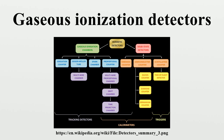Ionization type smoke detectors are gaseous ionization detectors in widespread use. A small source of radioactive americium is placed so that it maintains a current between two plates that effectively form an ionization chamber. However, if smoke gets between the plates where ionization is taking place, the ionized gas can be neutralized leading to a reduced current. The decrease in current triggers a fire alarm.